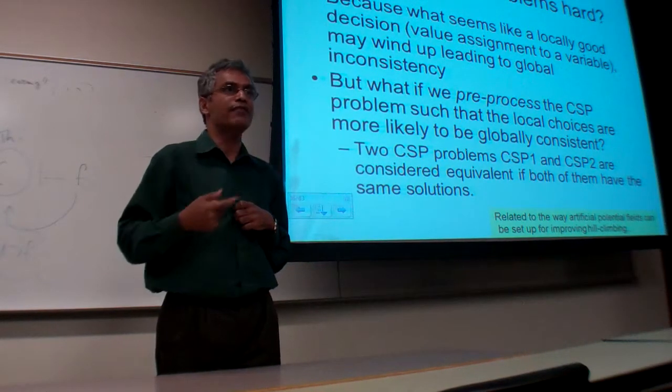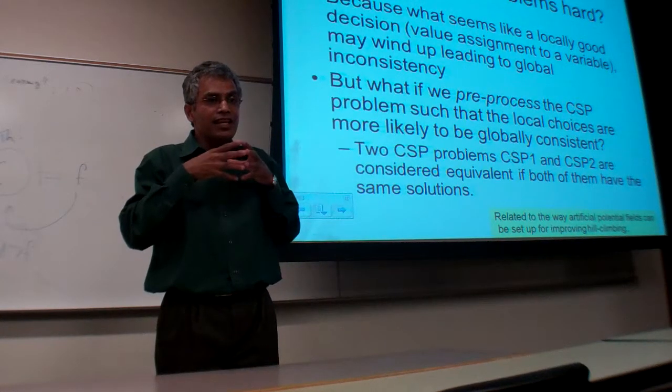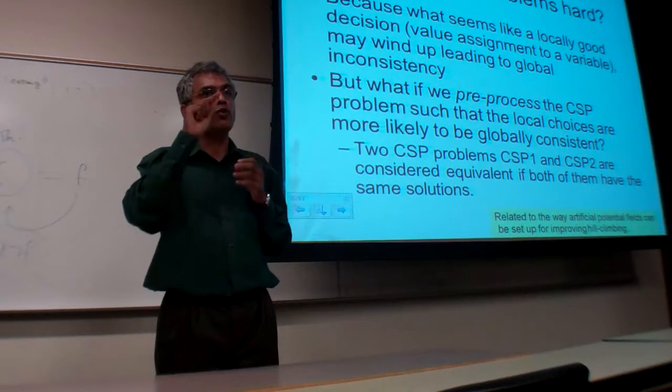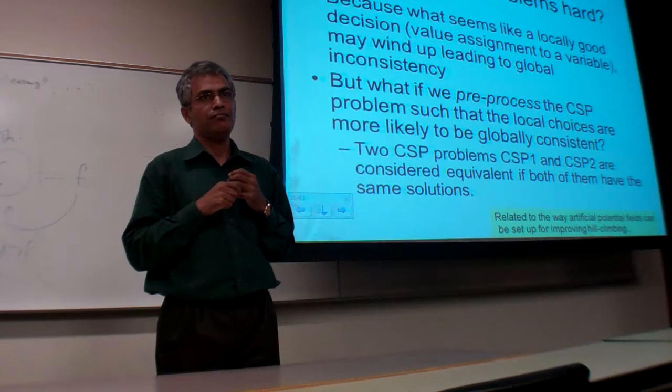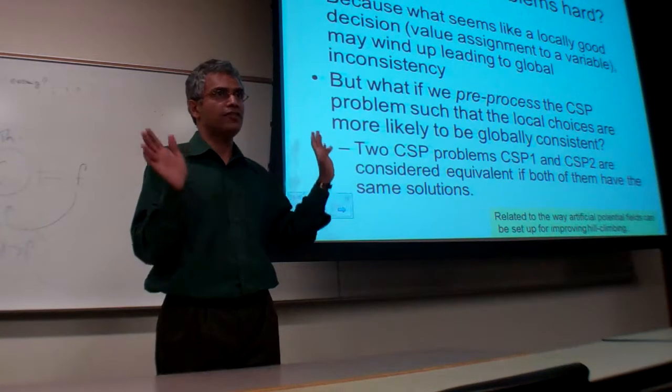And one of the things you'll see, for example, forward checking does, is it essentially enforces a partial notion of two-consistency. And for two-consistency, we use the term arc consistency. We'll talk about all of this when we come back.